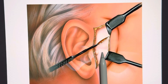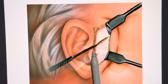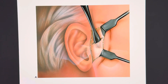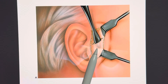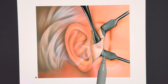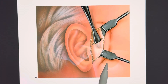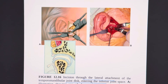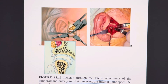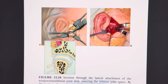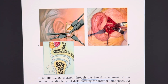With the flap retracted anteriorly, an incision is given through the superficial layer of the temporalis fascia till the periosteum of the zygomatic arch. Blunt dissection with the periosteal elevator is then continued anteriorly till the articular eminence, and inferiorly until we expose the whole of the capsule of the temporomandibular joint.